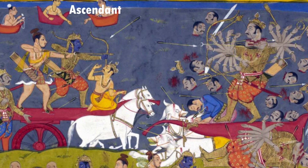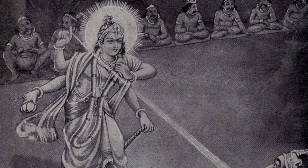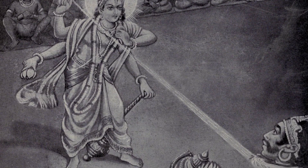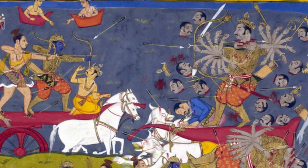Let's try to make sense of this. Ram and Ravan represent the ascendant and the lunar ascendant respectively. Ravan's approach of Ram during the battle represents the moon's transit of the ascendant, and as Ravan has his heads cut off repeatedly, he begins to mirror Rahu — the north node of the moon, which is actually the head of a demon serpent decapitated by Vishnu, who is Ram's true self, his divine incarnation.